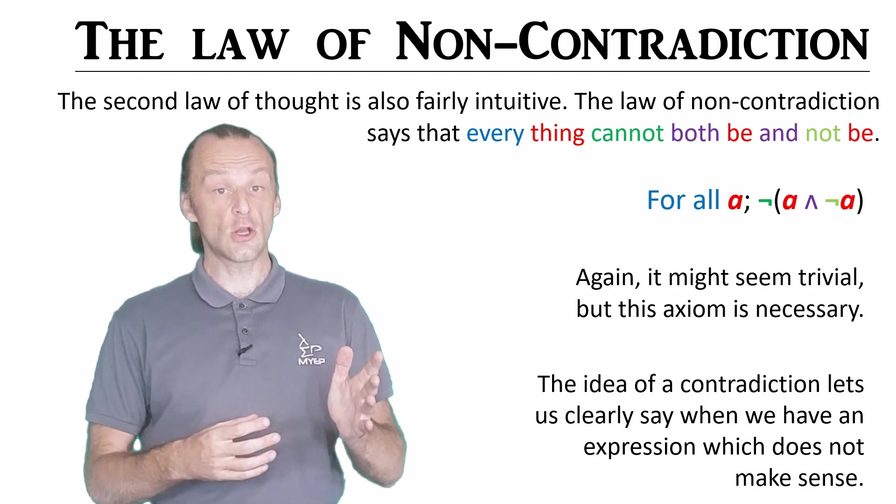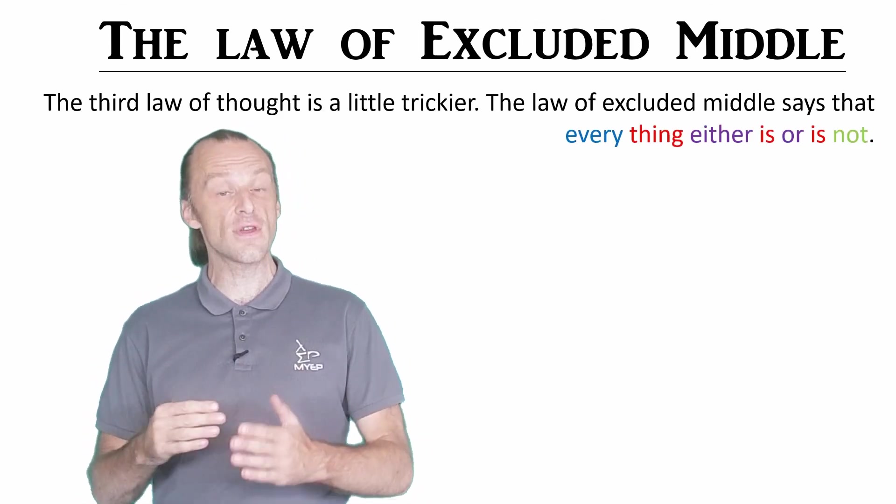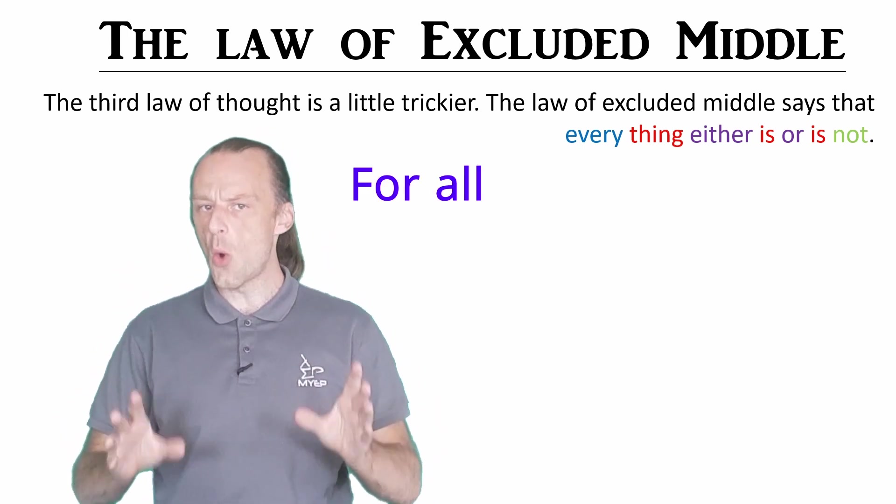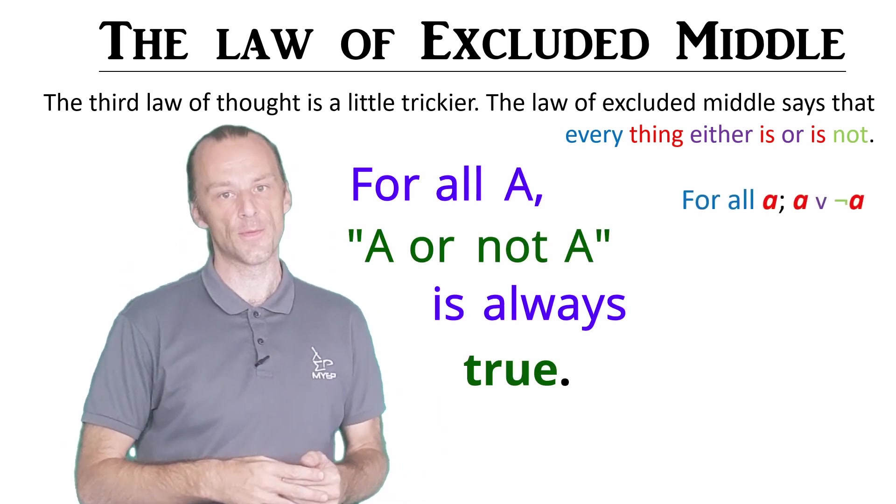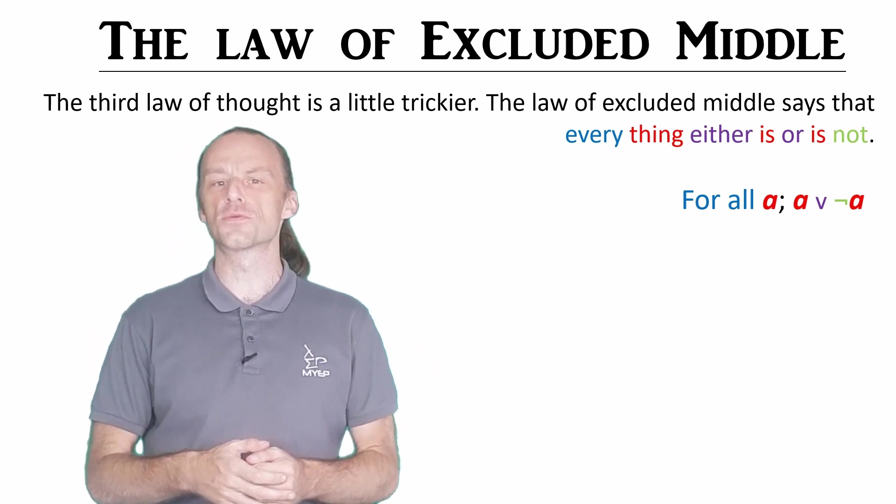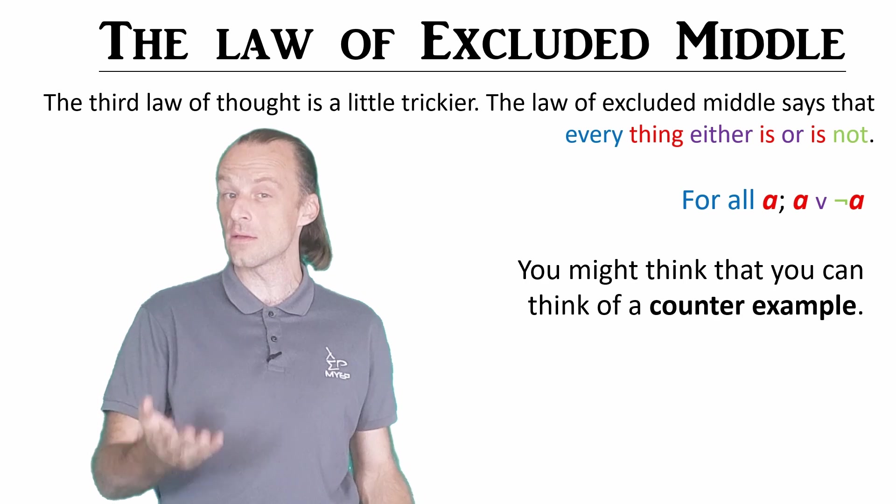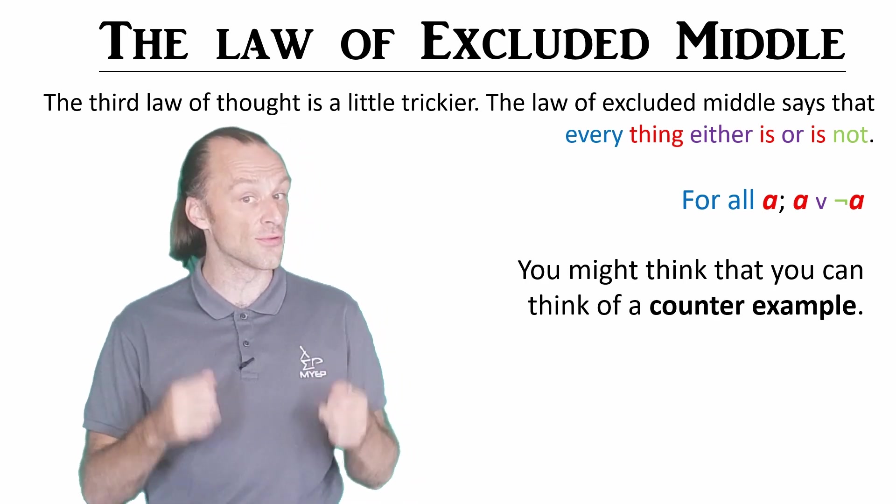The third law of thought is a little more complex. The law of excluded middle says that everything either is or is not. In other words, for all a, a or not a is always true. On one hand, this feels right, but on the other hand, sometimes people think they can come up with a counterexample to this kind of law, an example of something that breaks this rule.